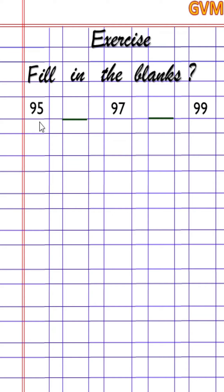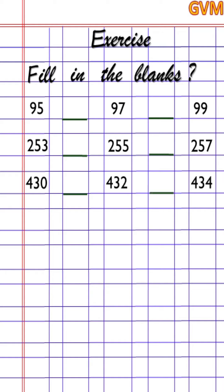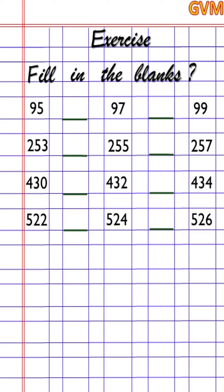Now write a box under 95. The next number set is 253 — put a dash in the same box format. Then 255 and 257. Next number set is 430, dash, 432 and 434. Next is 522, 524, 526. Next is 677, 679, 681.